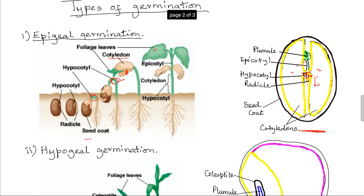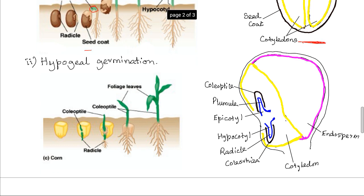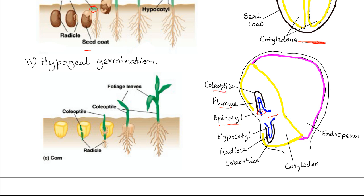The second type of germination is known as hypogeal germination. In hypogeal germination, for example in the maize grain, it is the epicotyl — the region between the plumule and the cotyledon — that elongates rapidly. In maize, the plumule is protected by the coleoptile. The coleoptile together with the plumule grow toward light and away from gravity.